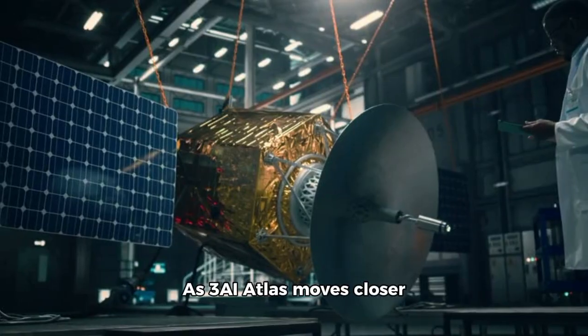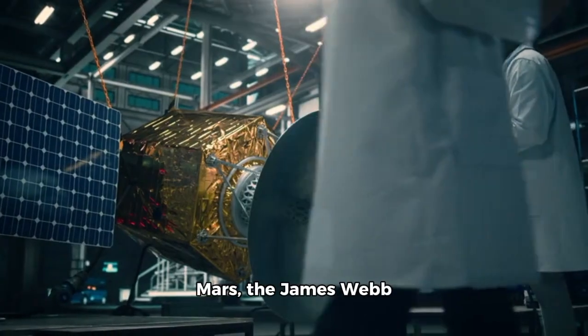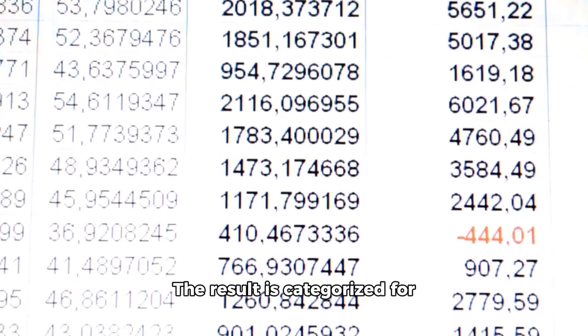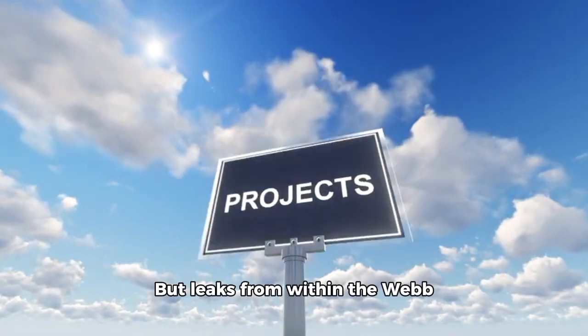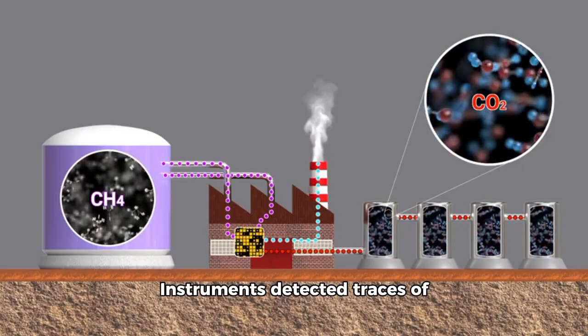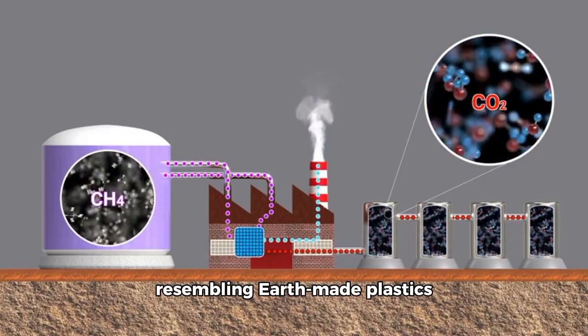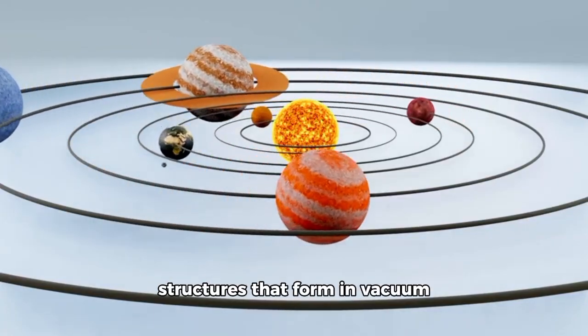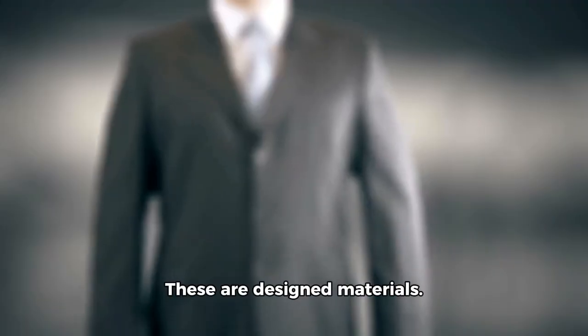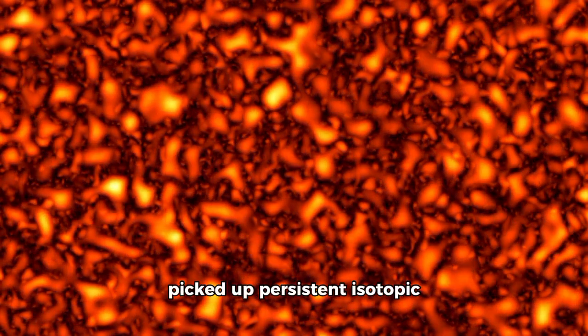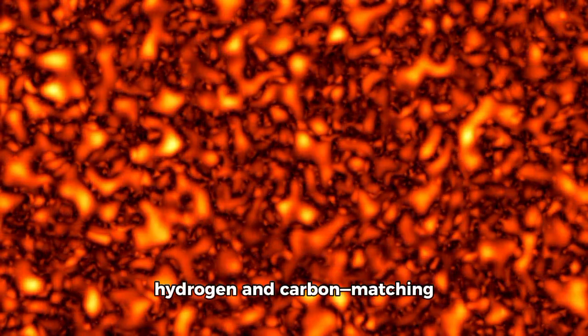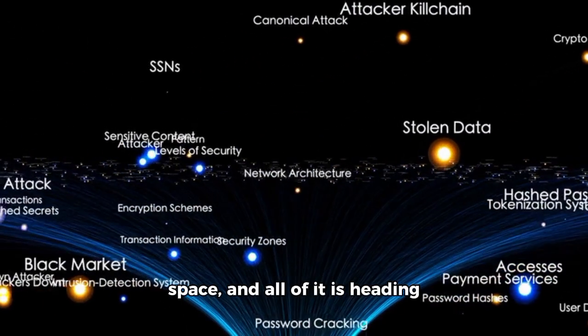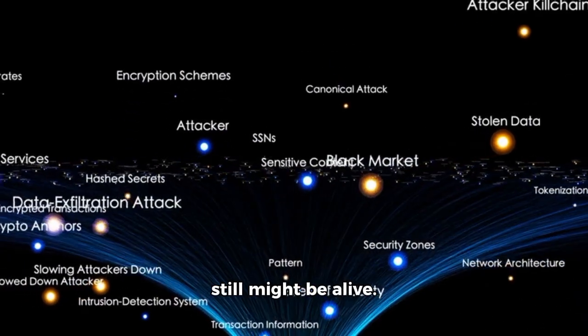As 3AA Atlas moves closer to its closest point to Mars, the James Webb telescope locks onto it for one final ultra-deep scan. The result is categorized for 48 hours before the public is given partial access. But leaks from within the Webb project tell a much darker story. Instruments detected traces of synthetic polymers—molecules resembling Earth-made plastics and carbon nanotubes in combination with natural gases. These aren't the kinds of structures that form in vacuum or during cometary heating. These are designed materials. Webb's spectrographs also picked up persistent isotopic anomalies, particularly in hydrogen and carbon, matching no known solar system object. In short, 3AA Atlas contains items that should not exist in space, and all of it is heading straight toward a planet that still might be alive.